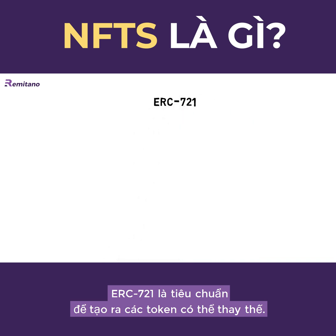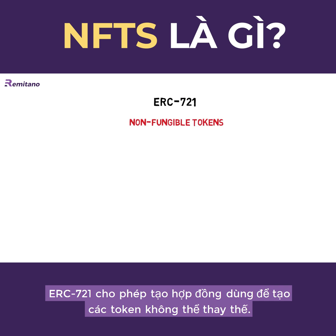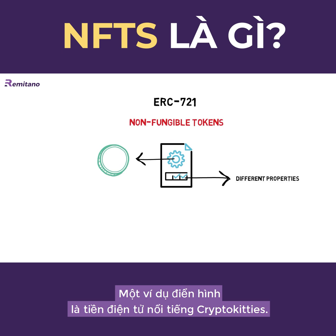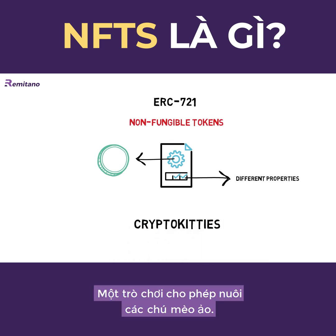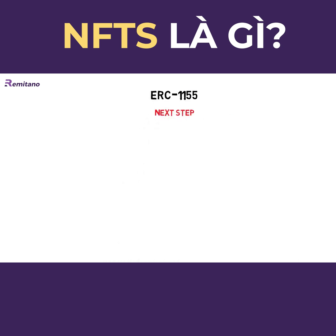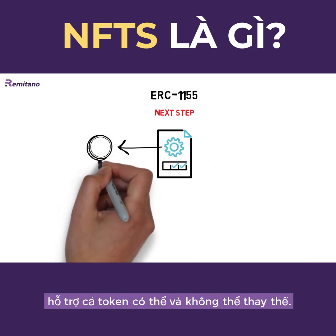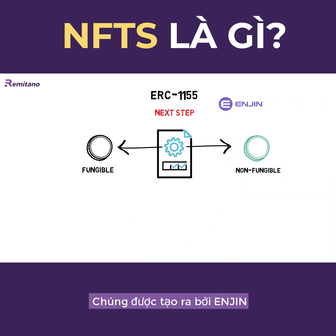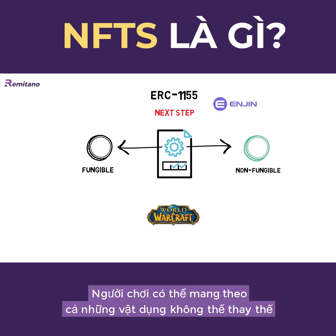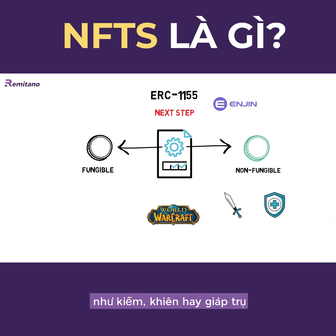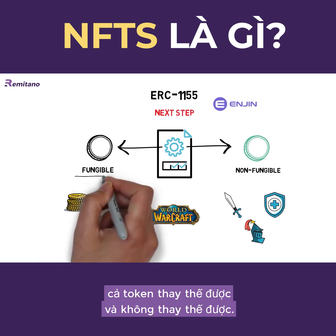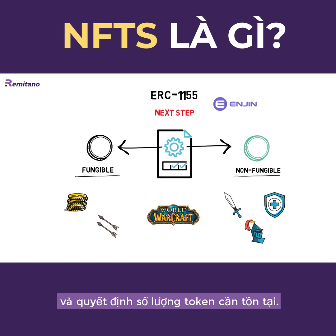ERC721 is a common standard for creating non-fungible tokens. It allows for creating contracts that can be used to create distinguishable tokens with different properties. A common example is the famous CryptoKitties, a game that allows for collecting and breeding virtual kittens. ERC1155 is the next step in creating non-fungible tokens. The standard allows for creating contracts that support both fungible and non-fungible tokens, and it was created by Enjin, a project focusing on blockchain-based gaming. In many games, such as World of Warcraft, a player can hold both non-fungible items like swords, shields, and armors, and fungible items such as gold or arrows. This standard allows developers to define both token types and decide how many of these tokens should exist.